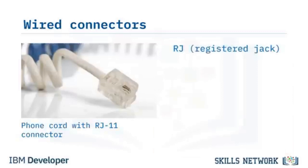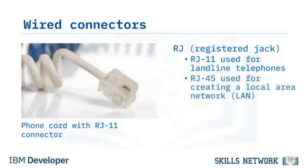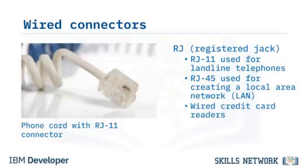An RJ, or registered jack connector, is used for landline telephones. There are two types of RJ connectors. An RJ11 is used to plug a phone into a wall outlet and for connecting a handset to a telephone. RJ45 connectors are used for connecting computers and other Internet-enabled devices, such as wired credit card readers, servers, modems, gaming consoles, and smart TVs to Ethernet-based local area networks, or ELANs.